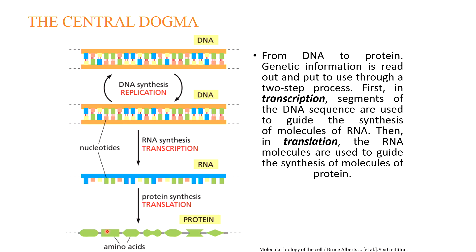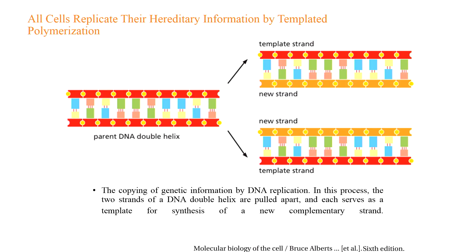Each DNA strand serves as a template for the synthesis of a new strand, producing two new DNA molecules — each with one new strand and one old strand. This is semi-conservative replication. Watson and Crick proposed the hypothesis of semi-conservative replication shortly after their 1953 publication on the structure of DNA. The hypothesis was proved by the experiment carried out by Matthew Meselson and Franklin Stahl in 1957.